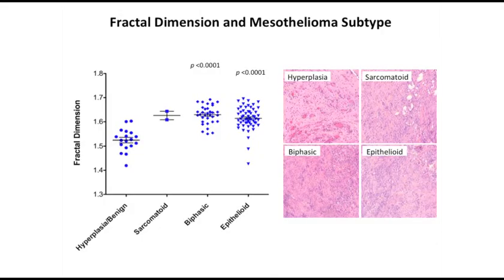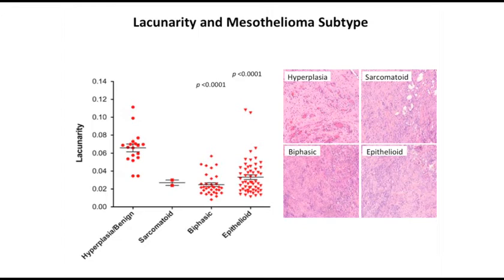So what about mesothelioma? Can one measure fractal dimensionality? Normal versus cancer cells are two different things, yet they still reflect nature. Here, fractal dimensionality is on the ordinate and the various tumors, as well as hyperplasia and benign, are on the abscissa — and these are quite significantly different. The fractal dimensionality of mesothelioma cells is much higher compared to normal cells. And looking at lacunarity — the texture of the tumor — it is much lower for the various tumor types, sarcomatoid, epithelioid, and so forth, as compared to normal cells.